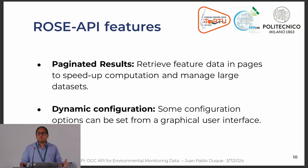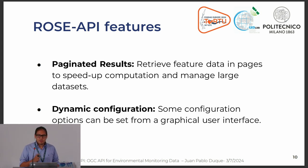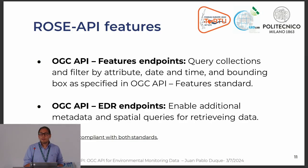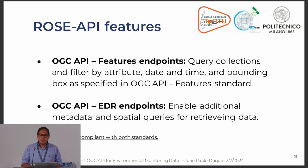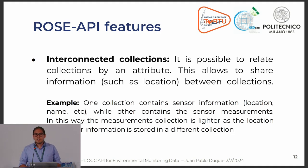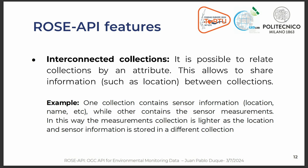We have pagination of results to manage big datasets, and dynamic configurations where you can tweak certain things in the application from a graphical user interface. We have OGC API Features and EDR endpoints for managing the visualization and retrieval of information, enabling additional metadata and spatial queries. Finally, we have interconnected collections — hierarchical connections between collections. For example, you can have sensor information in one collection and sensor observations in another, and interconnect them to provide location information to the observations without overloading the database.